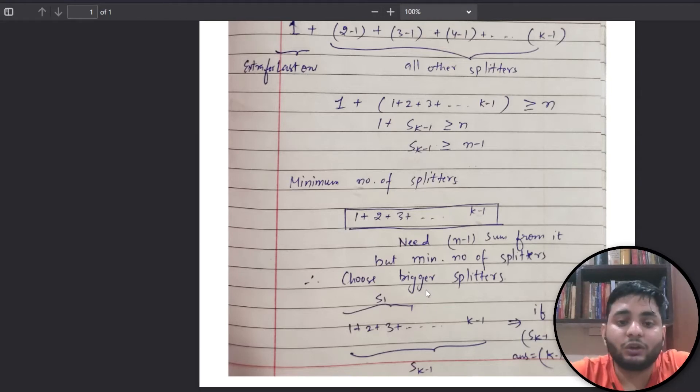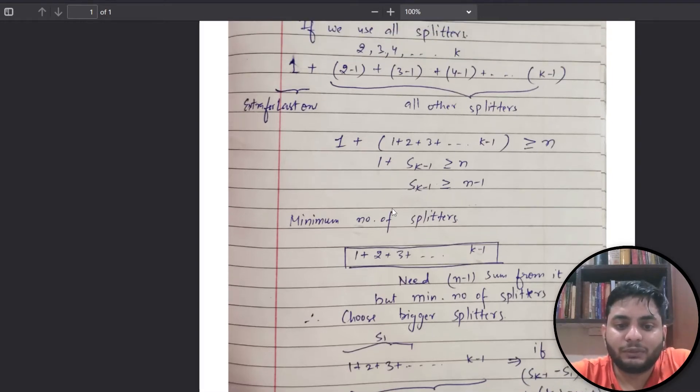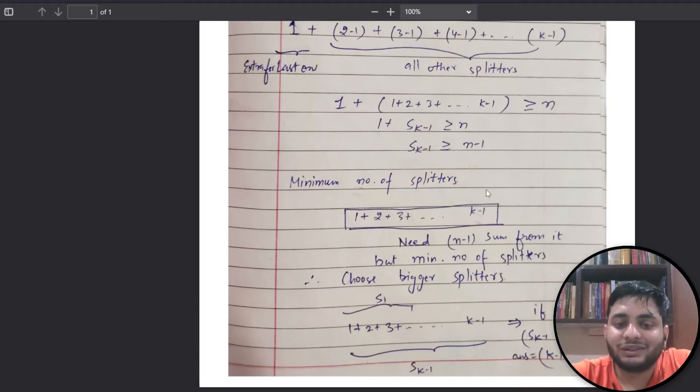I need to find a point in between where from this point on, I will only use this right region of splitters. Let's say the sum of the full range is S of k minus 1 and the left part sum is S1. From this point, the sum should be greater than equal to n.